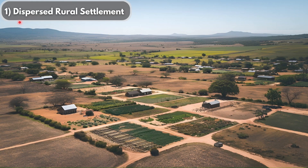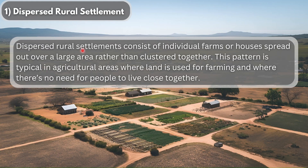The first type of settlement we will be looking at is dispersed rural settlements. We notice that the settlements are located very far from each other. Dispersed rural settlements consist of individual farms or houses spread out over a large area rather than clustered together. This pattern is typical in agricultural areas where land is used for farming and where there's no need for people to live close to each other.